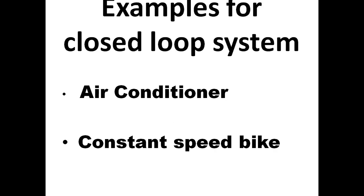Examples for closed loop system. Air conditioner. At home, you give some set temperature, say 20 degrees. You are sleeping nicely, but the closed loop air conditioner maintains a temperature equal to the set temperature.